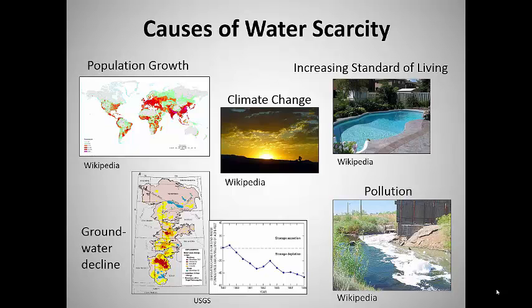Finally, even when water is available, it's often polluted by runoff or discharges from homes, industries, farms, mines, city streets, and areas where the vegetation has been disturbed and soil has been eroded.